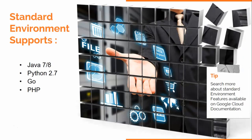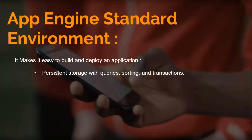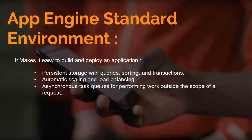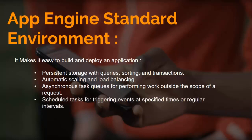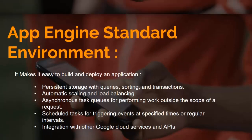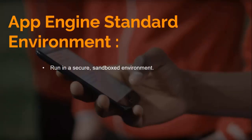Each runtime also includes a library that supports App Engine standard apps. For many applications, the standard environment runtimes and libraries might be all you need. The standard environment makes it easy to build and deploy an application that runs reliably even under heavy load and with large amounts of data, including persistent storage with queries, sorting and transactions, automatic scaling and load balancing, asynchronous task queues, scheduled tasks, and integration with other Google Cloud services. Applications run in a secure sandbox environment, allowing App Engine to distribute requests across multiple servers and scale to meet traffic demands.